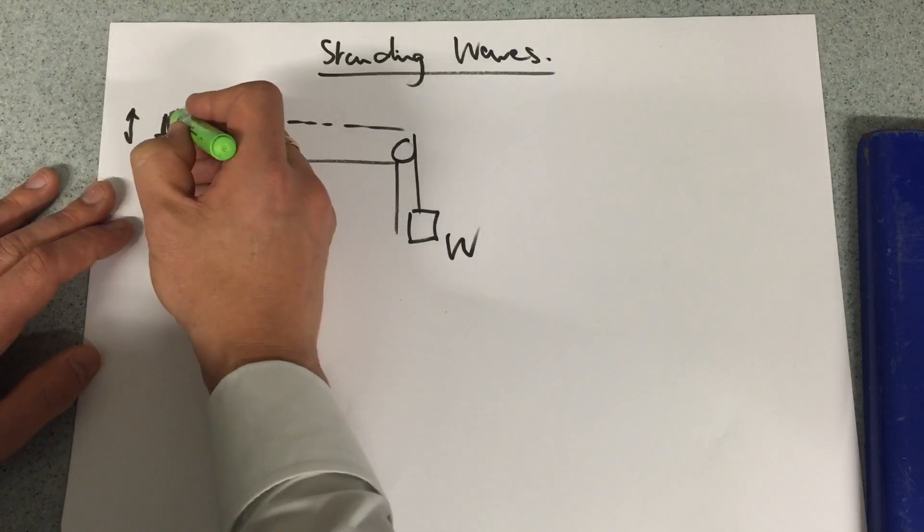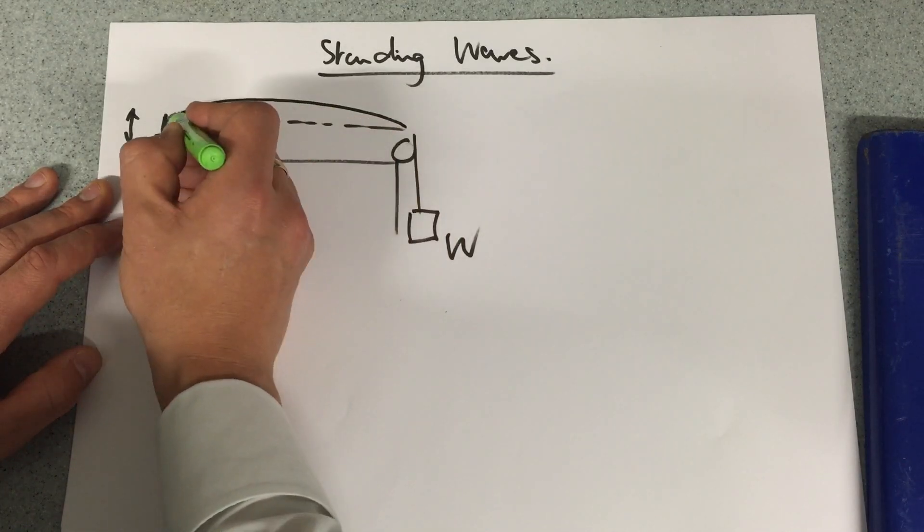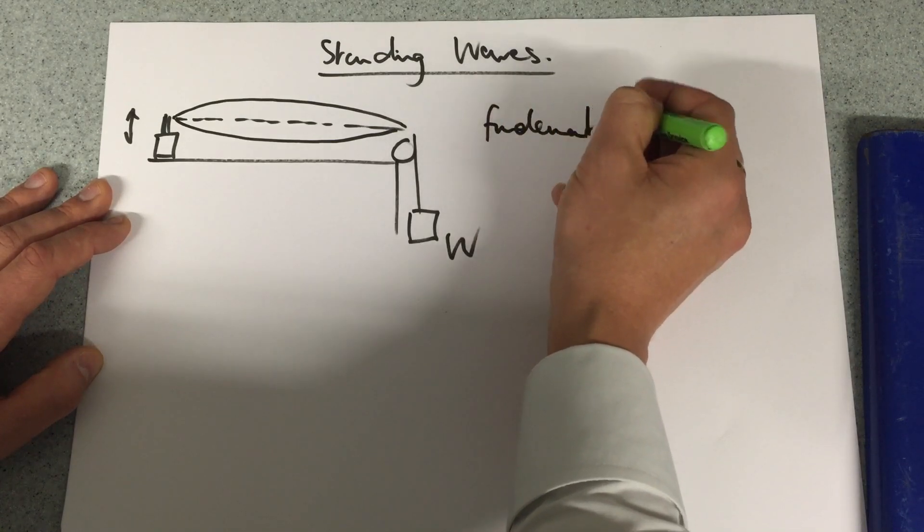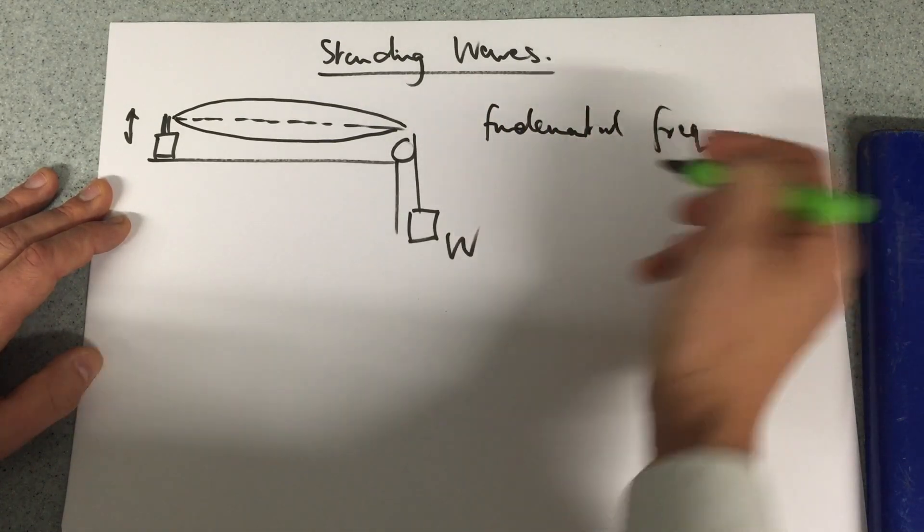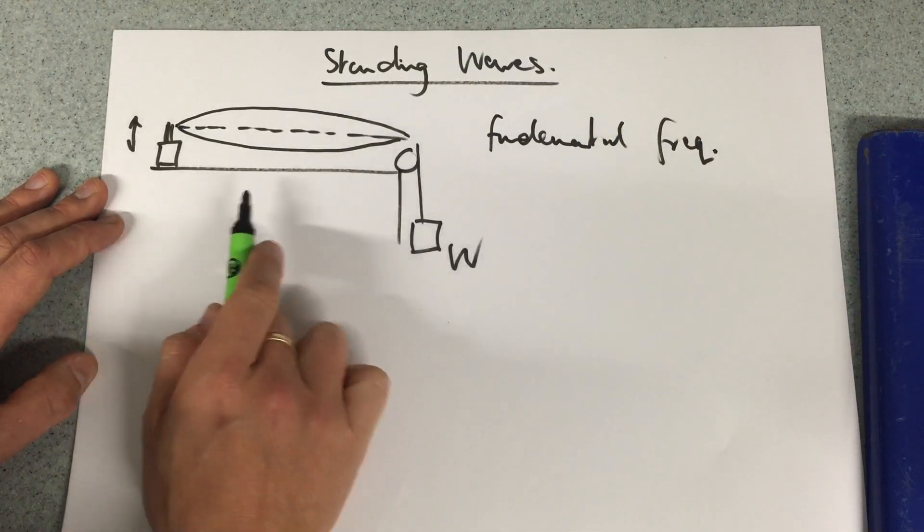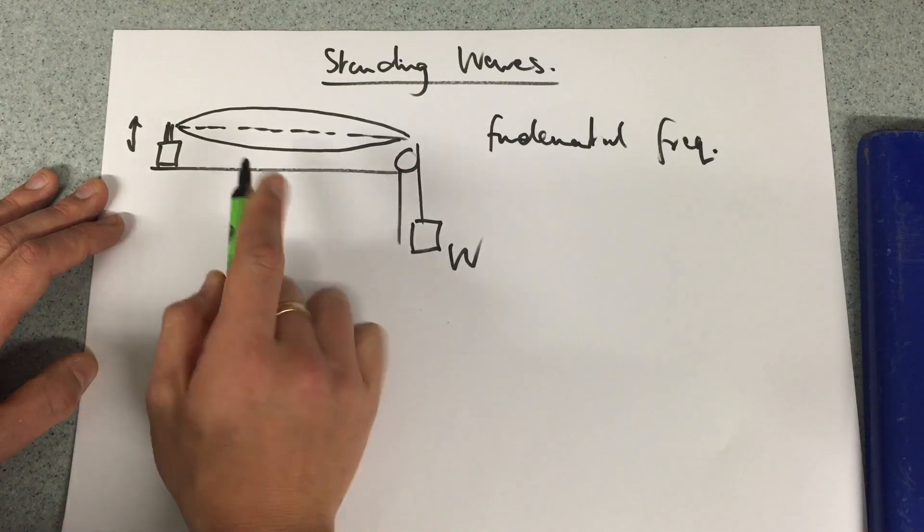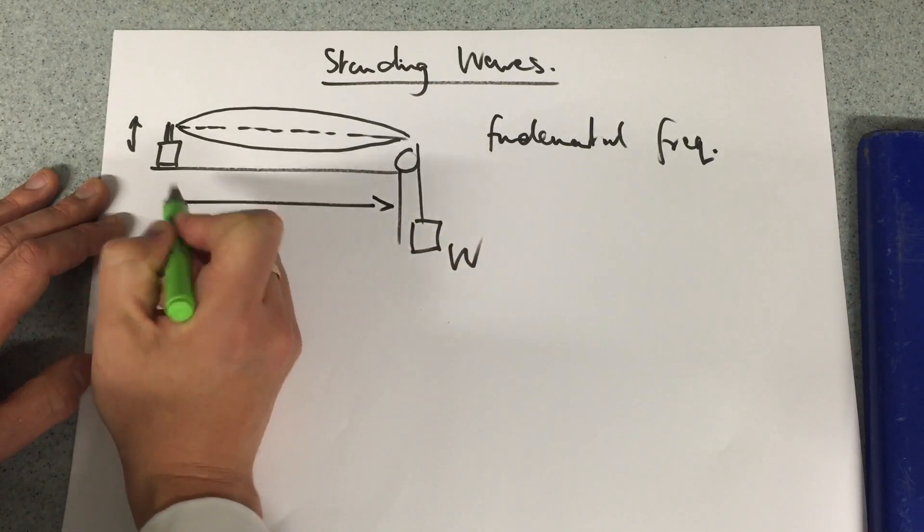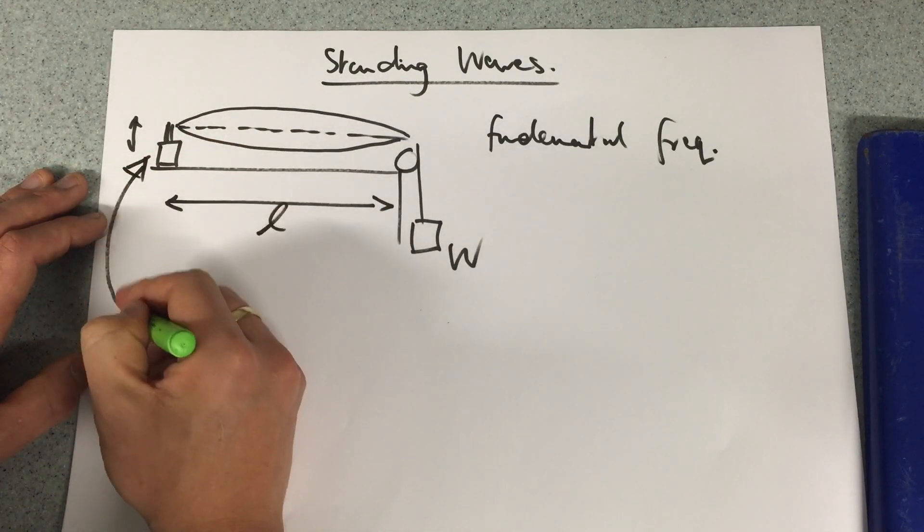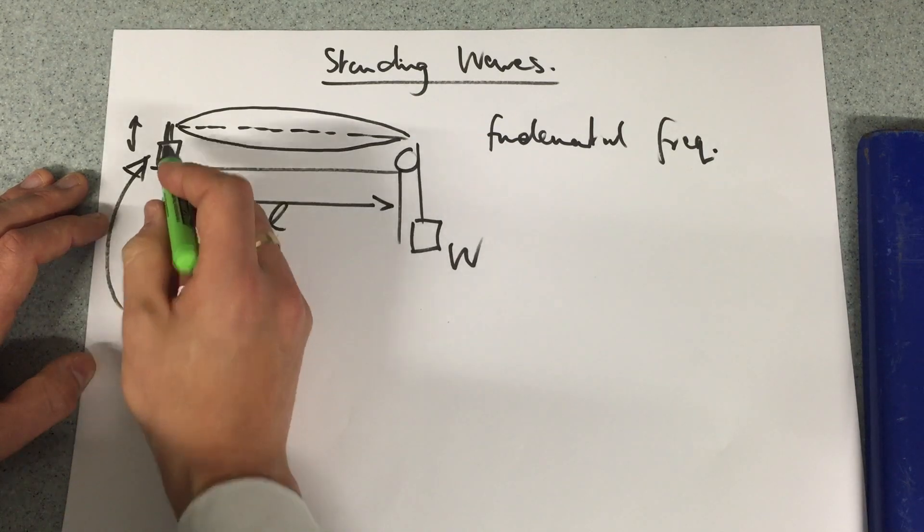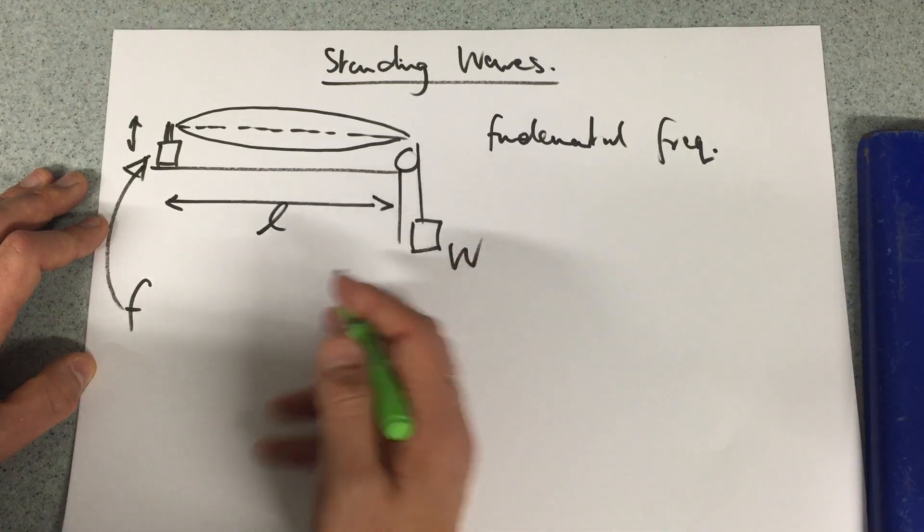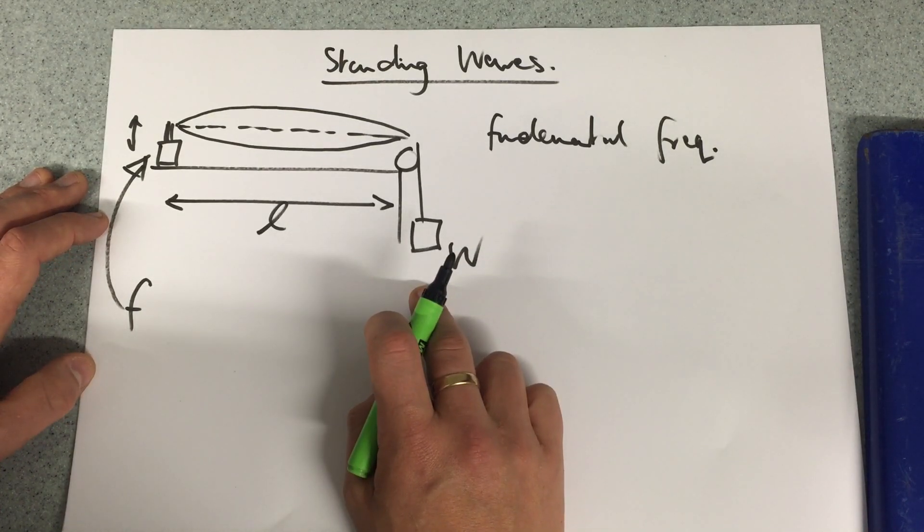When this vibrates up and down, we're looking for this shape that's created in the way, the fundamental frequency. What we're looking at is how the length between the two supports changes compared to how the frequency of this signal generator varies. And of course we have weight here which has an effect as well.